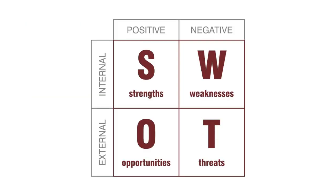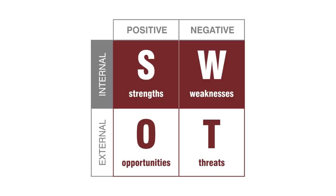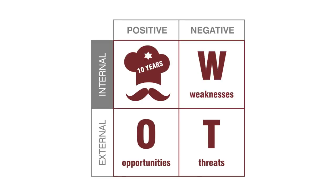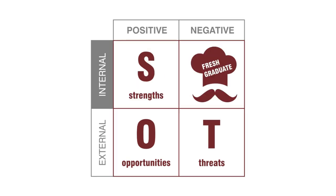This is the SWOT analysis graphic. These two squares on top are related to positive or negative internal factors that you somehow have the power to change inside your restaurant. An example of a strength would be that you have an experienced chef, and a weakness would be that your chef does not have much experience.